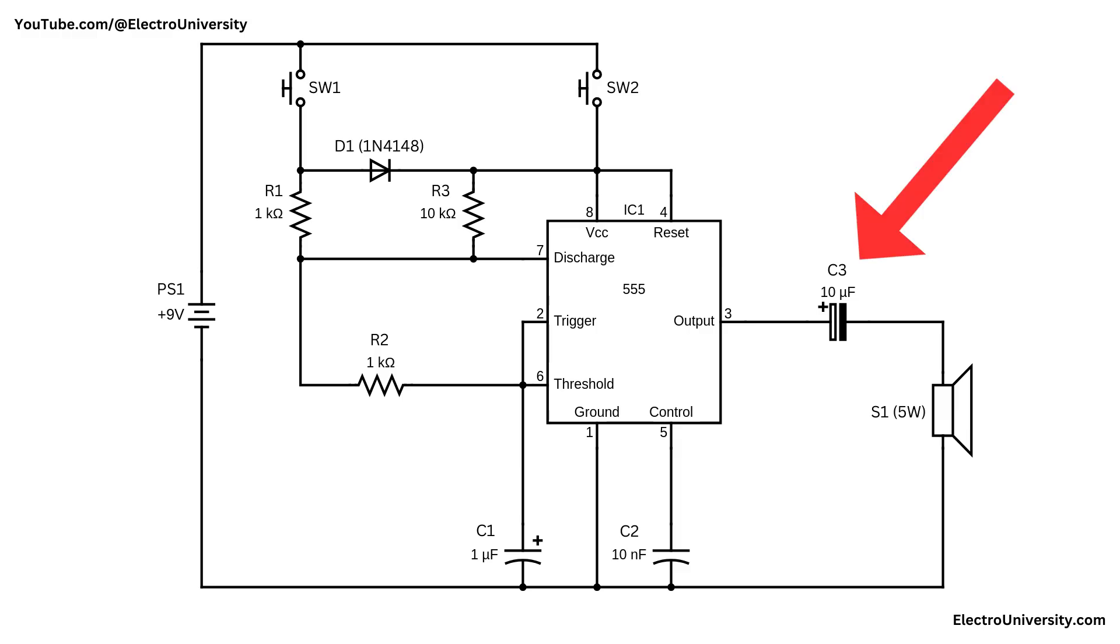Capacitor C3 acts as a coupling capacitor, allowing the AC pulse from the 555 timer to drive the speaker while blocking any DC component. The speaker, rated at 5 watts, plays a sound corresponding to the pulse shape and duration. The tone and length of the sound are affected by how long the switch is pressed and which path is used, giving switch one and switch two distinct audio characteristics.